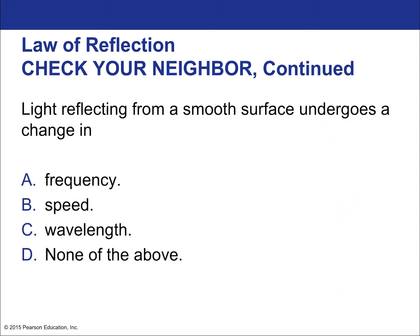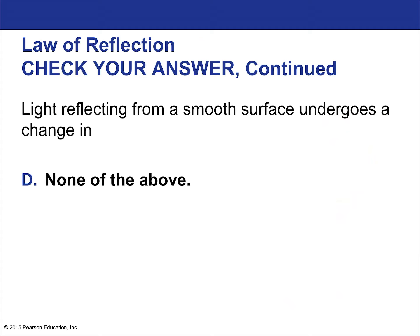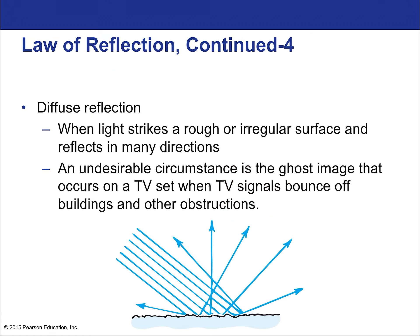Light reflecting from a smooth surface undergoes no change in frequency, wavelength, or velocity. Because the light doesn't travel from one medium to another — it leaves the air, reflects off the mirror, and re-enters the air — there's no change in speed. The same color (same frequency and wavelength) of light is reflected.